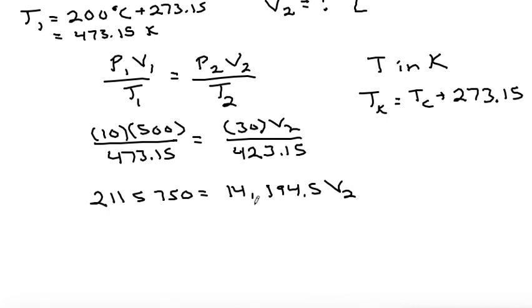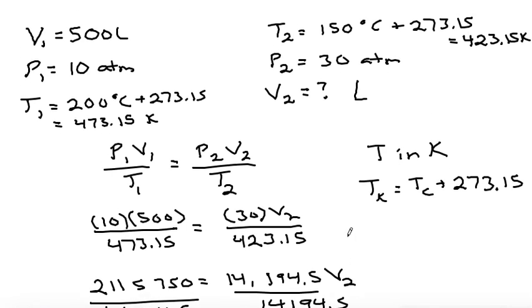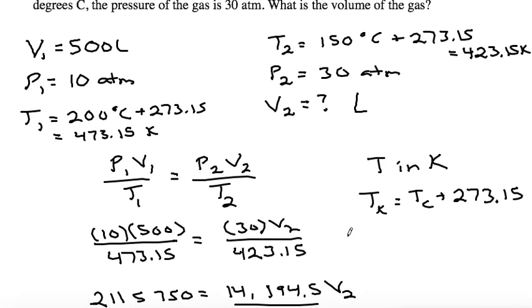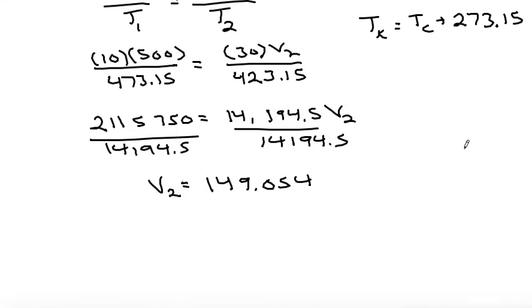To finish solving, we need to divide both sides by the 14,000. And plugging that into my calculator, I get V2 is equal to 149.054. And we need to round, it's probably one sig fig, but let's maybe round it to the nearest whole number. So 149 liters.